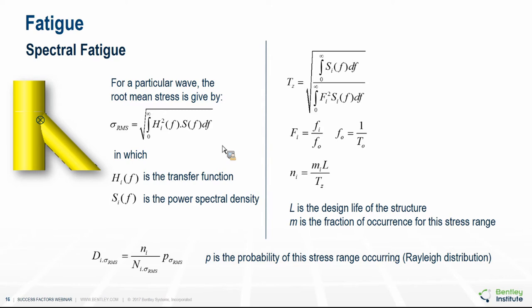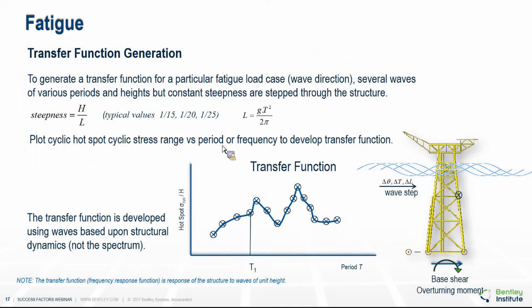For a spectral fatigue analysis, the majority of the analysis effort goes into defining the transfer function. A transfer function represents the dynamic characteristics of the structure when subjected to waves of different periods and heights from different directions. It is unrelated to the waves that cause the fatigue — people often confuse the two. The waves used to determine a transfer function are limited to waves of a given steepness value applicable to the geographical location of the structure.